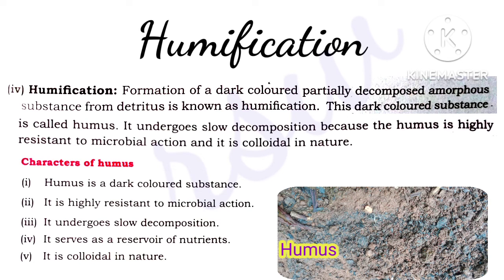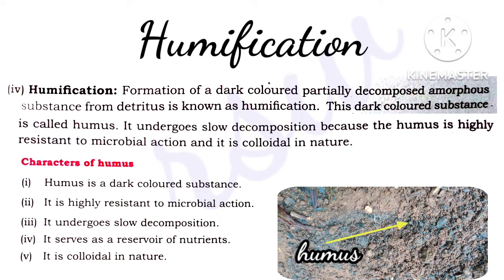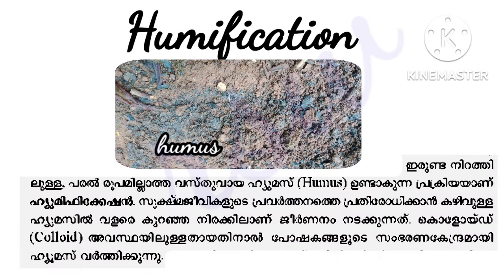Step 4: Humification. The formation of a dark-colored, partially decomposed amorphous substance from detritus is known as humification. This dark-colored substance is called humus. Humus undergoes slow decomposition because it is highly resistant to microbial action and colloidal in nature. Humus is dark-colored, highly resistant to microbial action, undergoes slow decomposition, serves as a reservoir of nutrients, and is colloidal in nature.